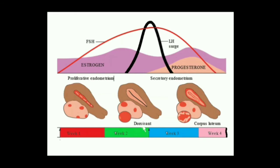After ovulation, the Graafian follicle becomes the corpus luteum, which produces progesterone. This progesterone prepares the uterine endometrium to receive a fertilized egg or zygote. If the egg is not fertilized, estrogen and progesterone levels decrease, causing bleeding or menses, and the cycle repeats itself.